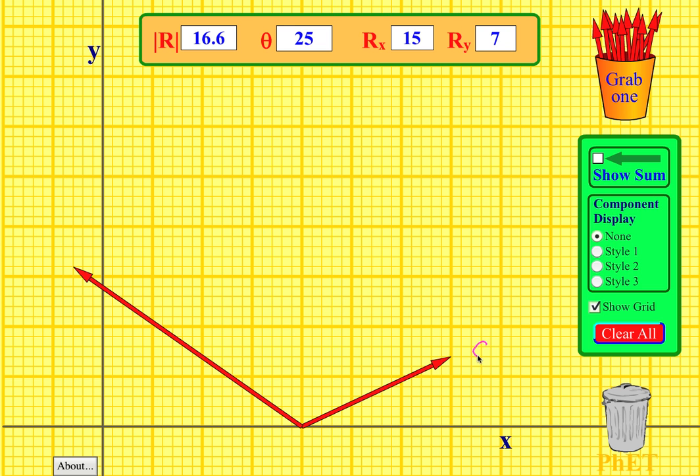Down here I have vector C, and vector C has a magnitude of 16.6, and it has a direction of 25 degrees measured counterclockwise from the plus x-axis.